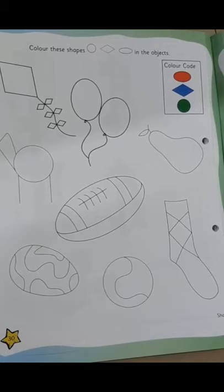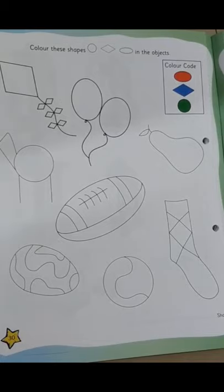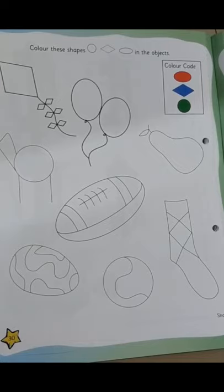And the last one is a circle. And which color should the circle be? Yes, it should be green in color. So, we are going to do it that way. I will be just showing you a few, and the rest you will be doing it yourself.